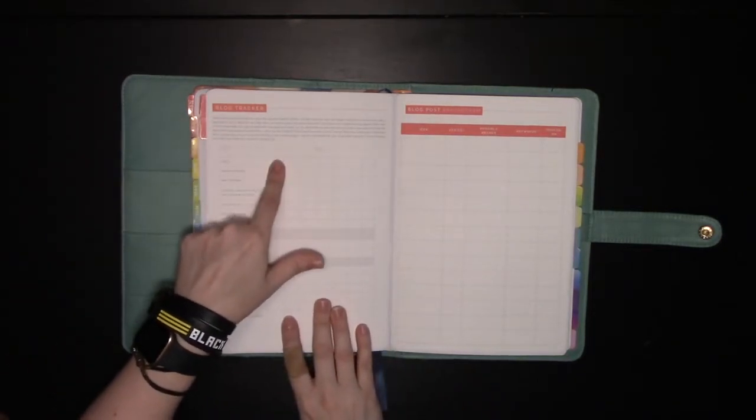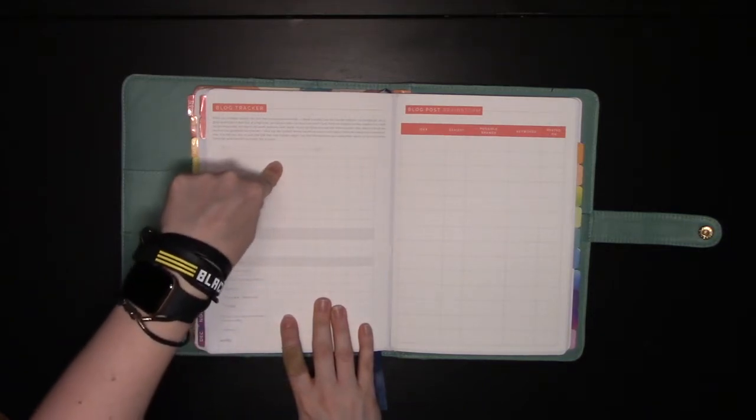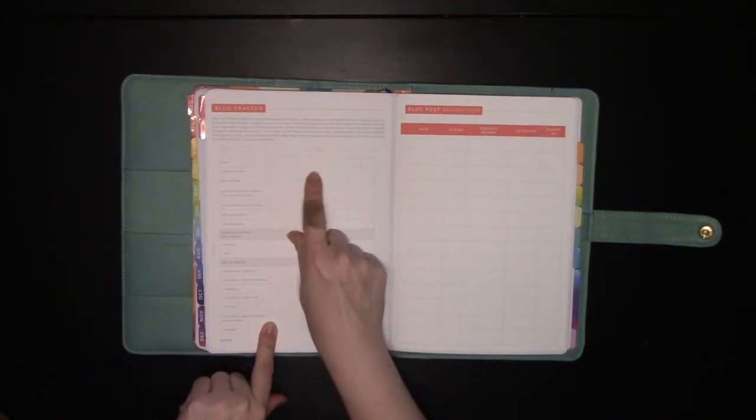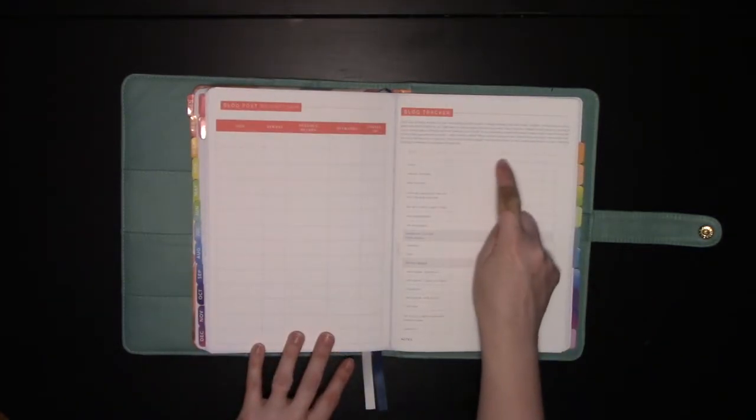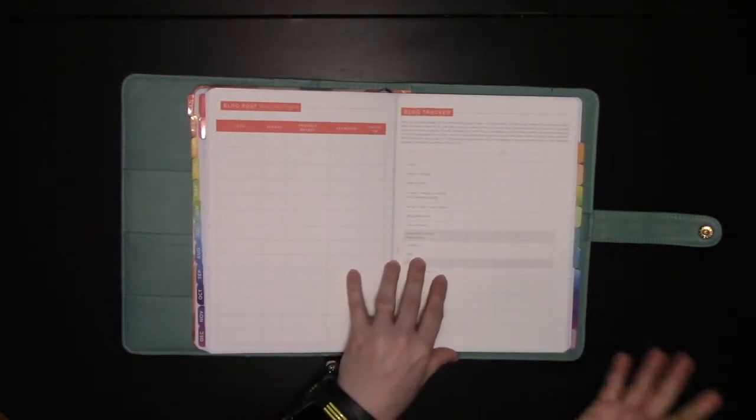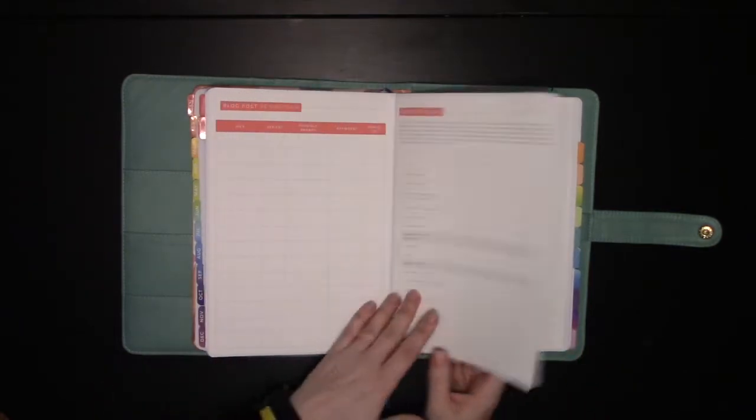And with this one, we fill it out where this will be my totals at the end of 2020. And then January, February, March, April, May, June. And then July, August, September, October, November, December and a year totals. All right.